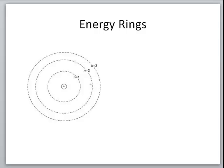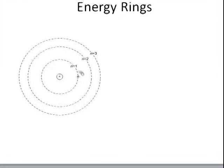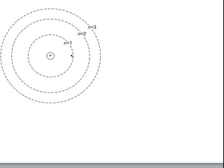Looking at the energy rings, there are a couple of important things to point out. We've got the nucleus at the center and around it the different rings. We'll refer to the rings as energy levels — when we say energy level 1, we mean n equals 1; energy level 2 means n equals 2, and so on. The electrons sit inside these rings and there is a specific number of electrons per ring, which we'll get to.